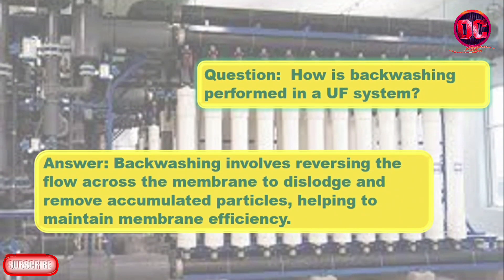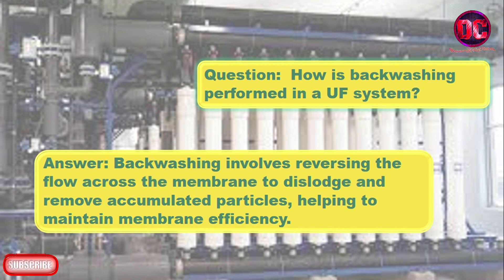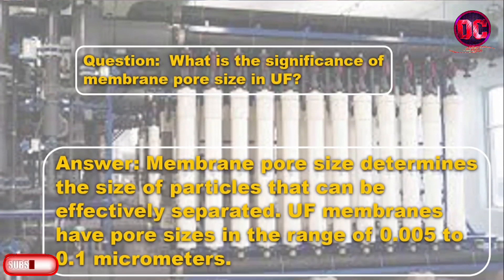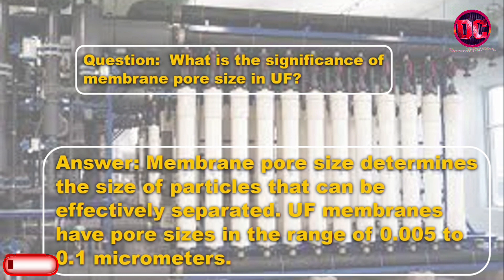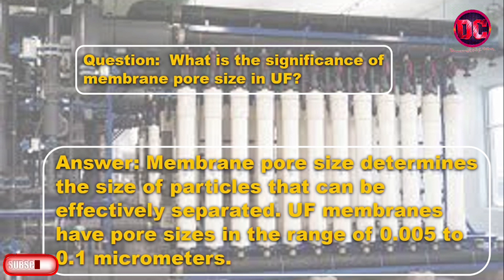How is backwashing performed in a UF system? Backwashing involves reversing the flow across the membrane to dislodge and remove accumulated particles, helping to maintain membrane efficiency. What is the significance of membrane pore size in UF? Membrane pore size determines the size of particles that can be effectively separated. UF membranes have pore sizes in the range of 0.005 to 0.1 micrometers.